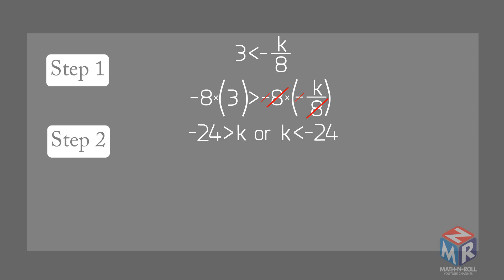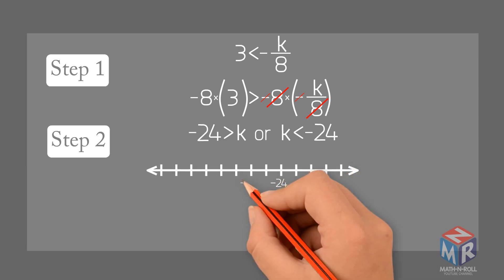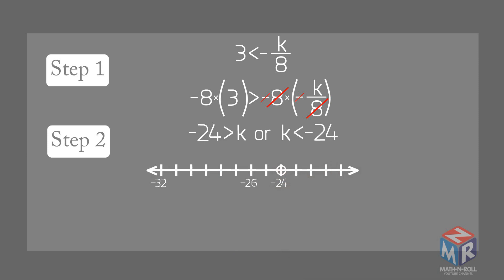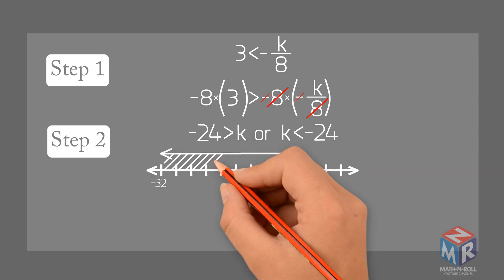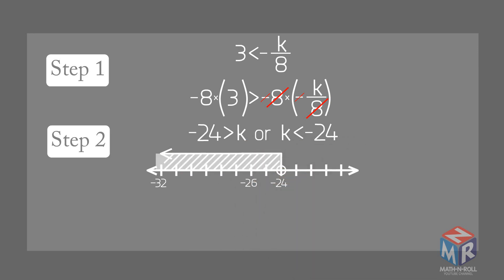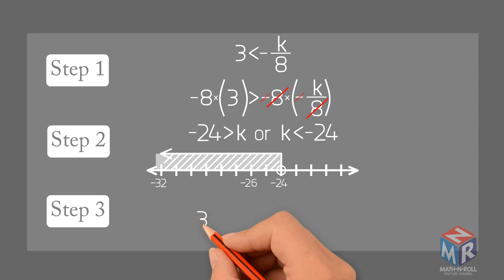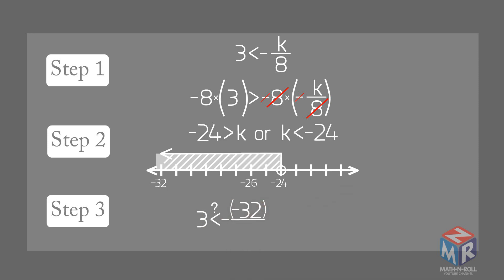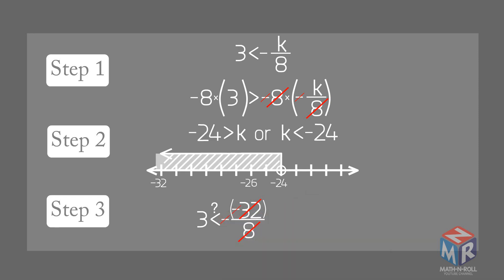Step 2: Graph the solution. Use an open circle to show that negative 24 is not a solution. Step 3: Check the solution. Substitute a solution from the shaded part of your number line into the original inequality. Substitute negative 32 for k into 3 is less than negative k over 8. 3 is less than negative negative 32 over 8, and 3 is less than 4. The inequality is true.